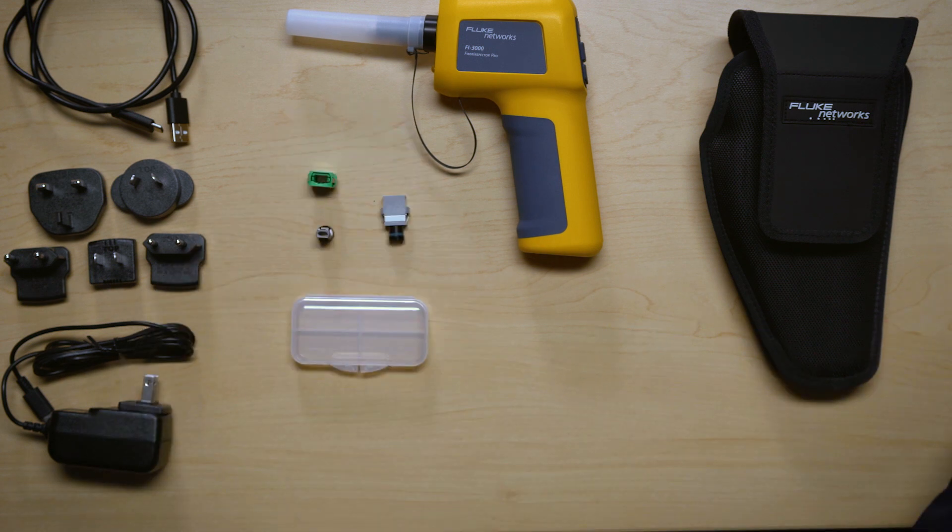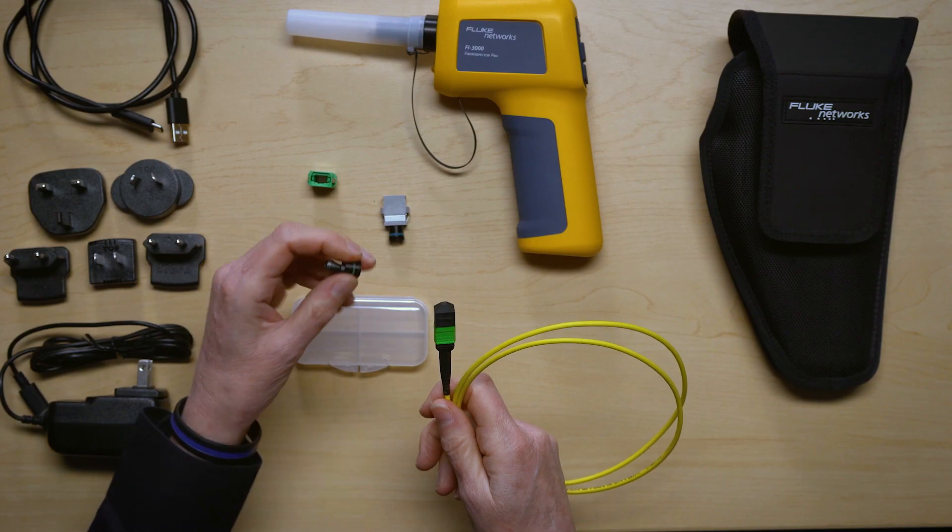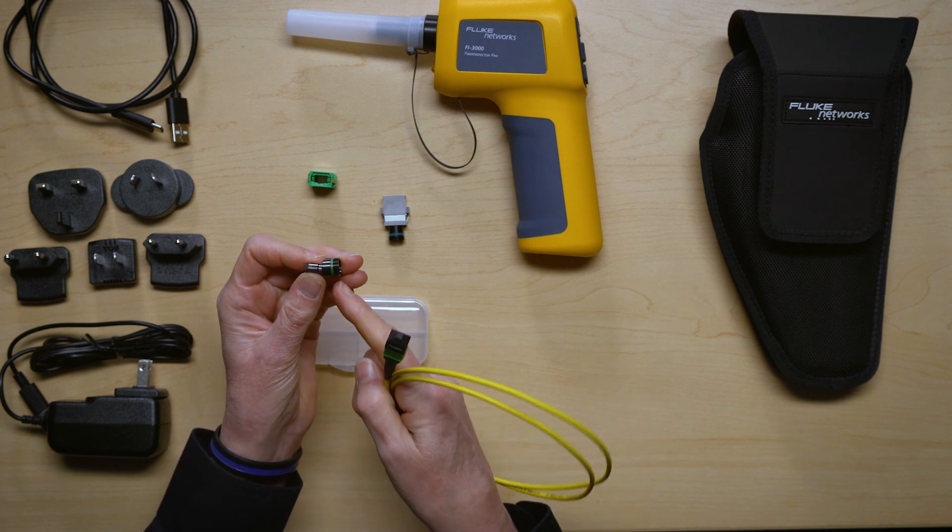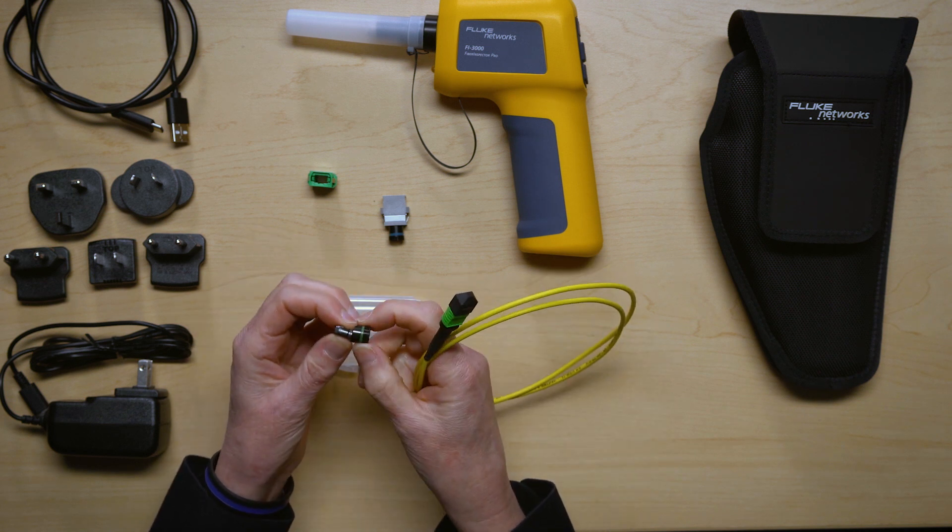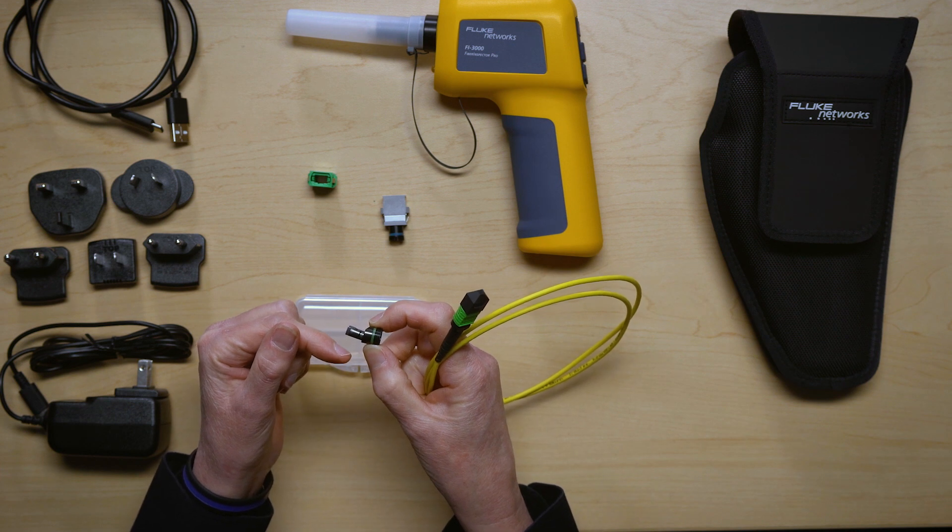If you are using single mode which uses APC then you'll be using an APC tip. You'll notice it also is green and it is angled because all APC has a 7 to 8 degree angle to it.